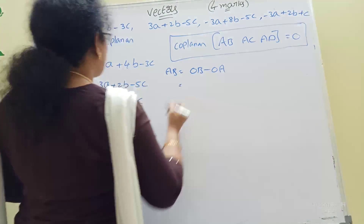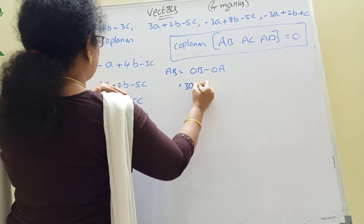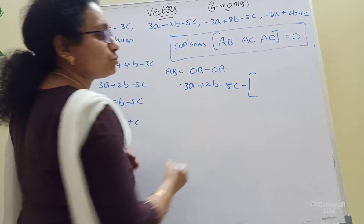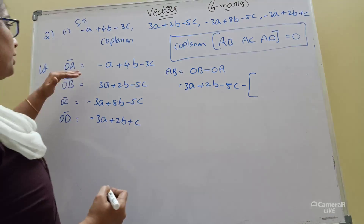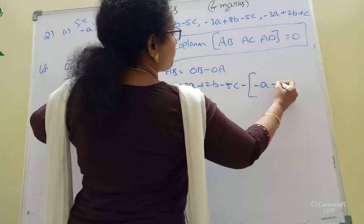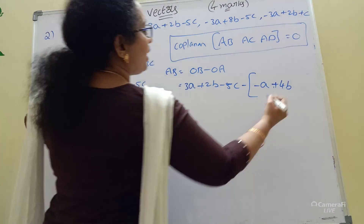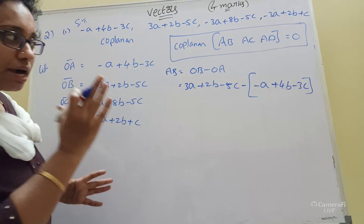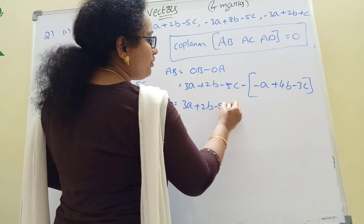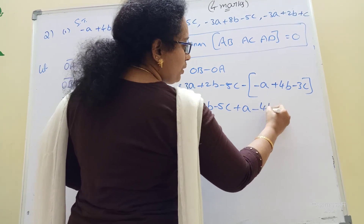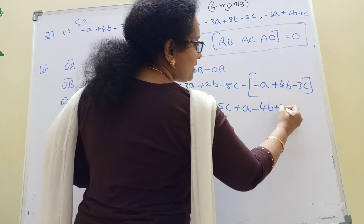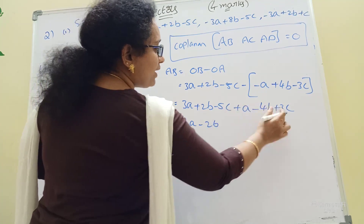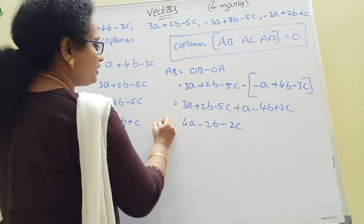OB minus OA. OB is 3A plus 2B minus 5C, minus bracket minus A plus 4B minus 3C. If you have a minus, you can use a bracket. Change signs: minus minus plus, minus plus minus 4B, minus minus plus 3C. So we get 4A minus 2B minus 2C. This is AB bar.